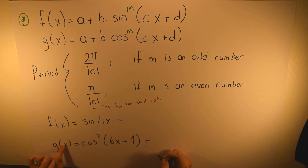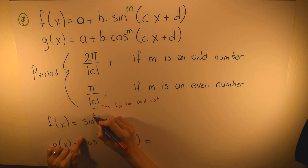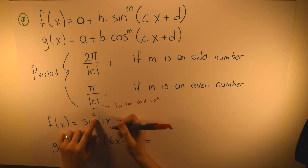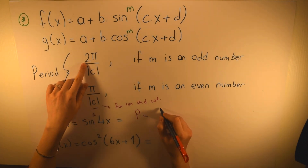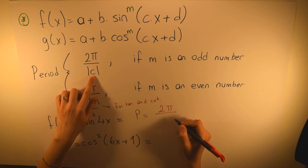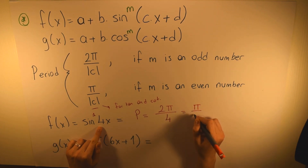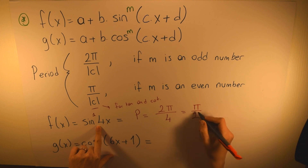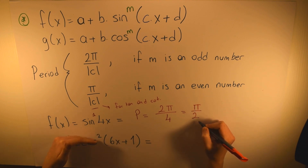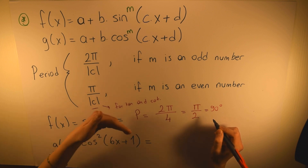Let's look at the examples. For f(x) = sin(4x), the exponent of sin is 1, which is an odd number, so we use the formula: period = 2π over |c| = 2π/4 = π/2. This means the period of sin(4x) is π/2, which equals 90 degrees — it repeats itself every 90 degrees.